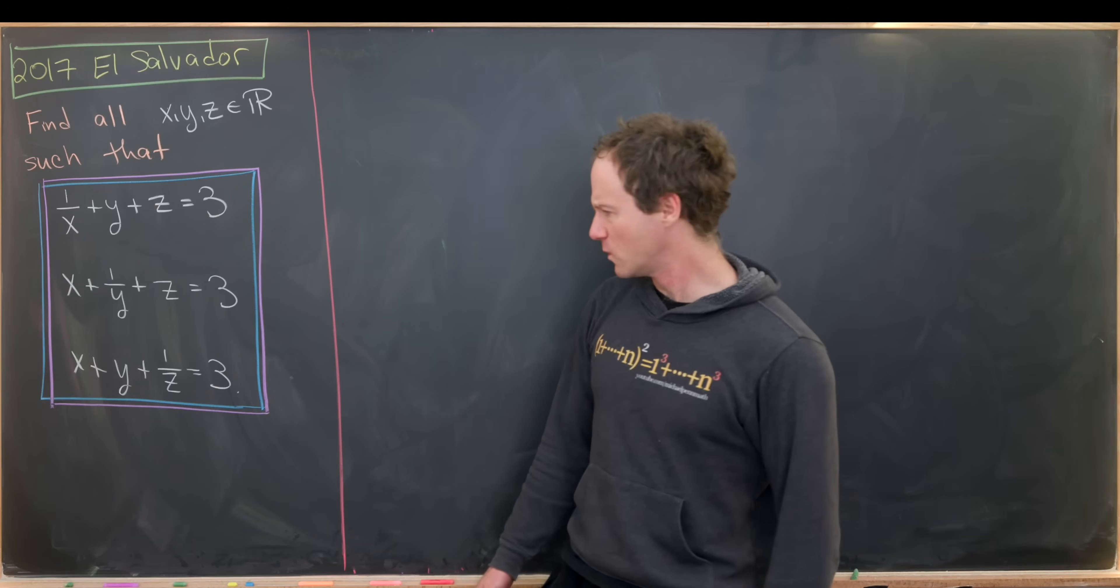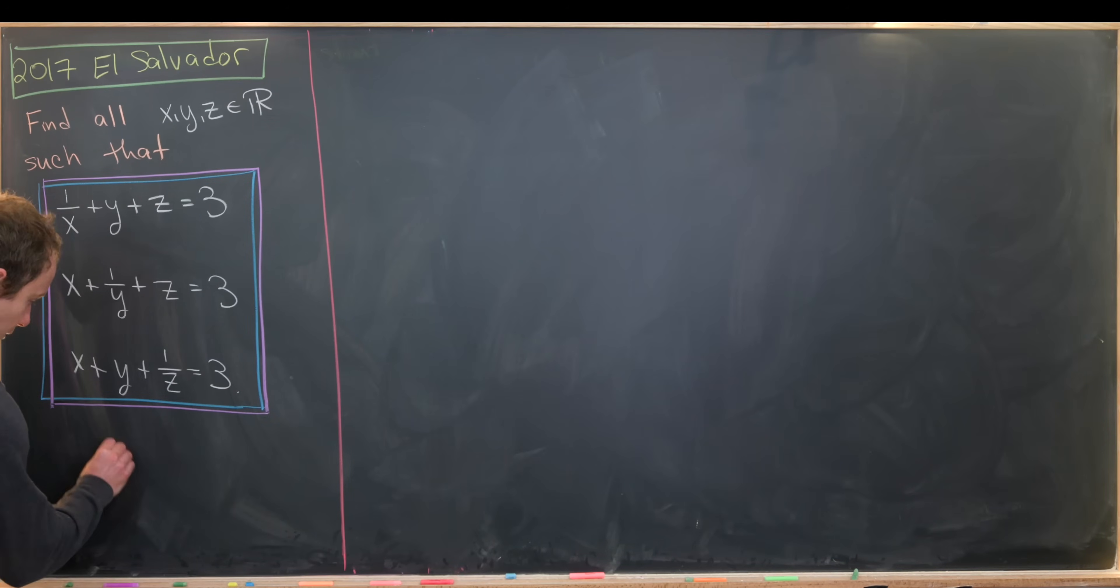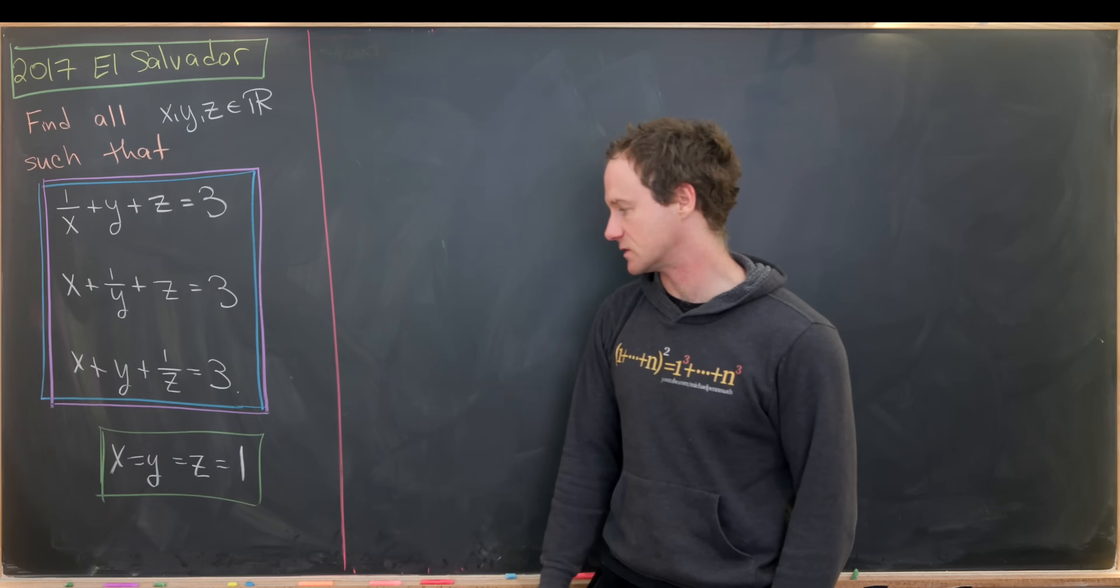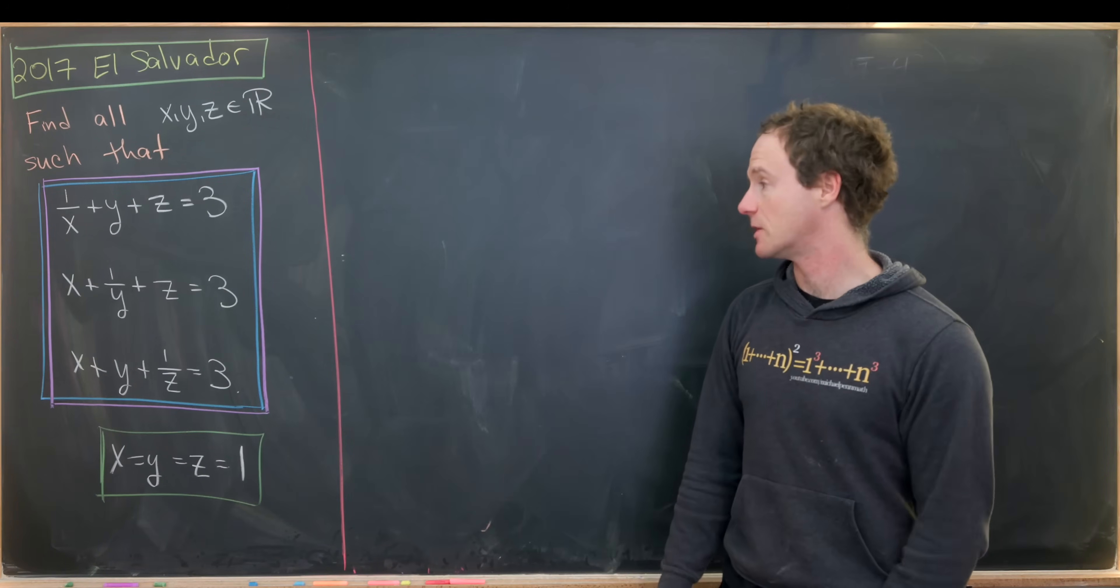Before we jump into a general solution, I'd like to first note that there's a really trivial solution which is x equals y equals z equals 1. Sometimes the trivial solution is the only solution, but I think this is a nice problem because we'll get some other non-trivial solutions. So let's jump into our solution.